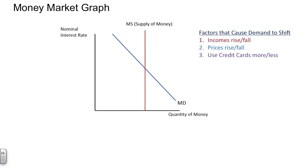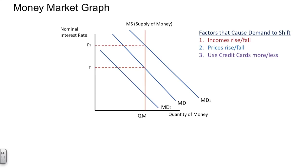In addition to a shift in the money supply, the money demand curve can also shift. The demand for money might be influenced by factors such as an increase or decrease in income. A household with an income of $10,000 per year is likely to demand less money than a household with $100,000 per year. Additionally, as prices go up or down in the economy, this will cause individuals to demand more or less money. Also, with the advent of alternative forms of payment, we have seen changes in the demand for money. If we see a shift to the right in the demand for money, interest rates will increase. If we see a reduction in the demand for money, we will see a reduction in interest rates.